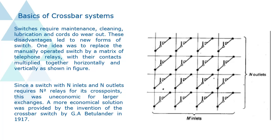Since a switch with N inlets and N outlets requires N square relays for its crosspoints, this was uneconomic for larger exchanges. A more economical solution was provided by the invention of the crossbar switch by G.A. Bechelander in 1917.